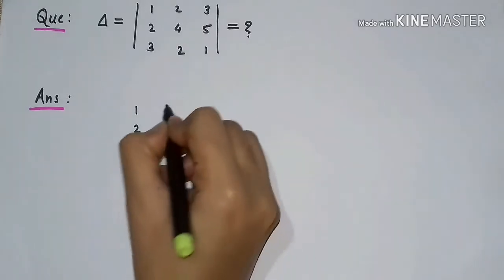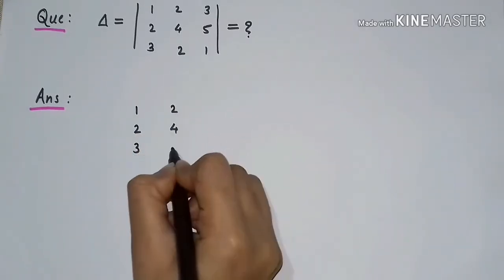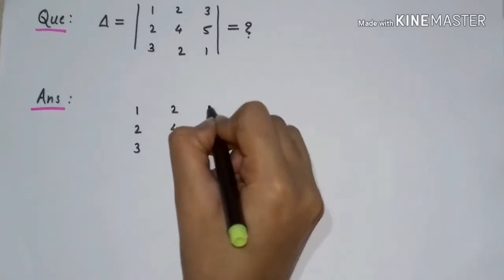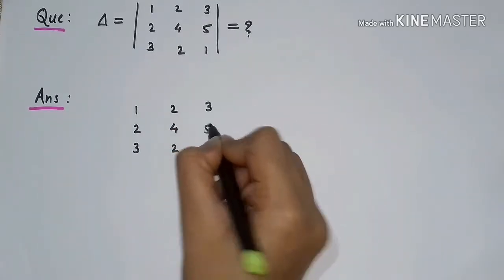This is the first column of the determinant, this is the second column of the determinant, and this is the third column of the determinant.